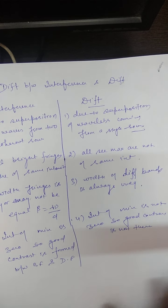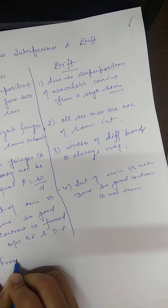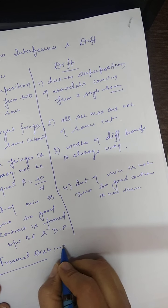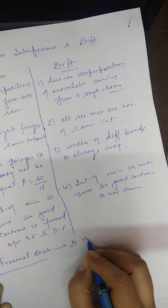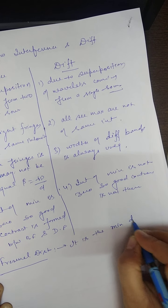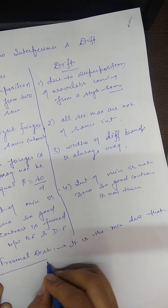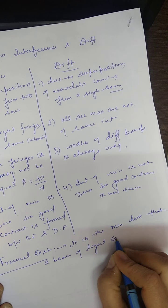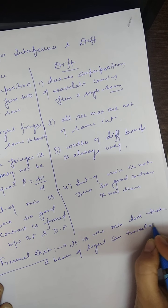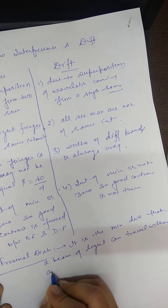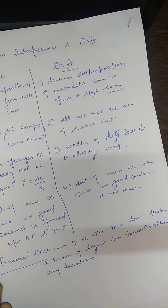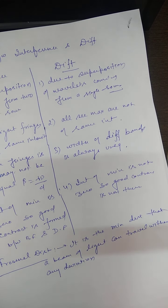After this we have Fresnel distance. Fresnel distance is the minimum distance that a beam of light can travel without any deviation.